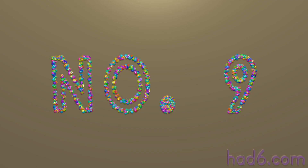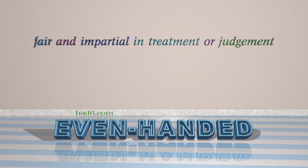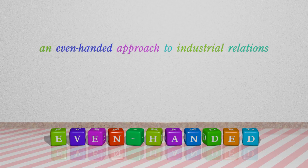Number 9: Evenhanded — which means fair and impartial in treatment or judgment. For example: An evenhanded approach to industrial relations.